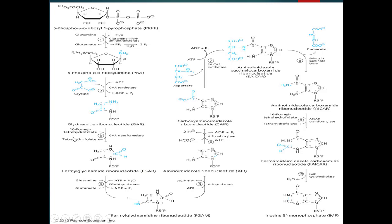Formyl-tetrahydrofolate is converted into tetrahydrofolate. After the conversion of GAR into FGAR, the enzyme FGAM synthetase uses energy and converts glutamine into glutamate, producing FGAM or formylglycinamidine ribonucleotide.